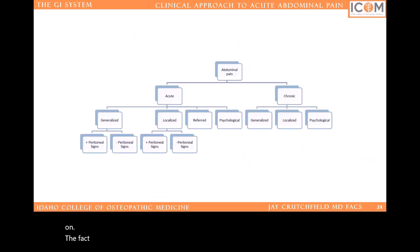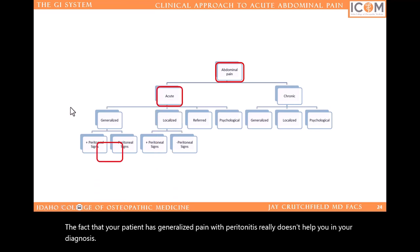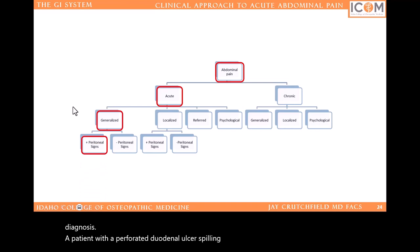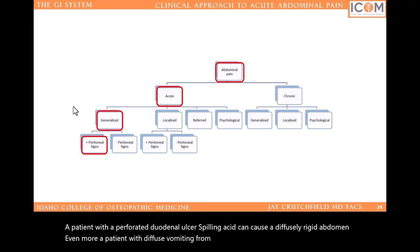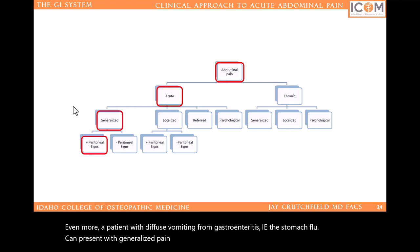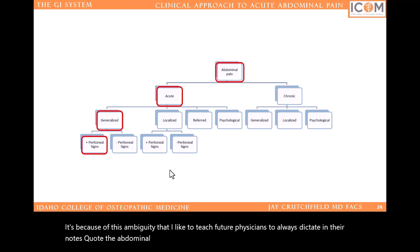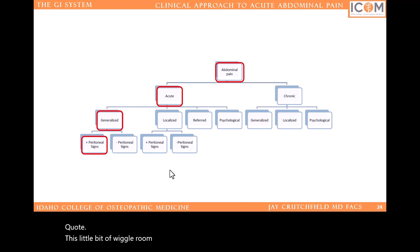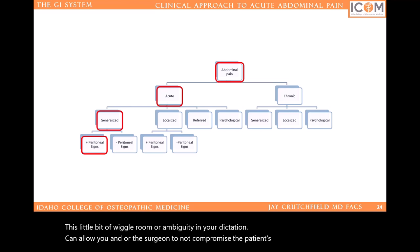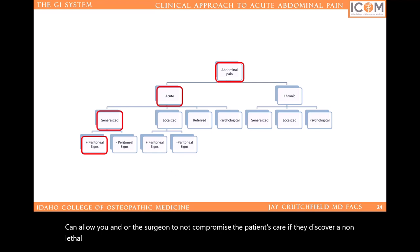The fact that your patient has generalized pain with peritonitis really doesn't help you in your diagnosis. A patient with a perforated duodenal ulcer spilling acid can cause a diffusely rigid abdomen. Even more, a patient with diffuse vomiting from gastroenteritis — the stomach flu — can present with generalized pain and peritoneal signs, guarding or rebound. It's because of this ambiguity that I like to teach future physicians to always dictate in their notes: 'The abdominal examination suggests peritonitis with guarding or rebound.' This little bit of wiggle room in your dictation can allow you and the surgeon to not compromise the patient's care if they discover a non-lethal diagnosis such as constipation or mittelschmerz.